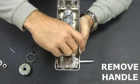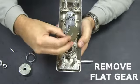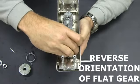Now remove the handle. Pick up and remove the flat gear and reverse to the opposite side of the stop post. Make sure that the black gear does not rotate.